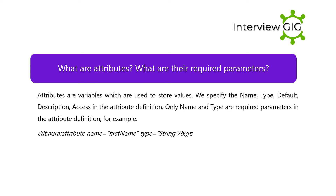What are attributes and their required parameters? Attributes are variables which are used to store values. We specify the name, type, default, description, and access in the attribute definition. Only name and type are required parameters in the attribute definition. For example: <aura:attribute name="firstName" type="String" />.